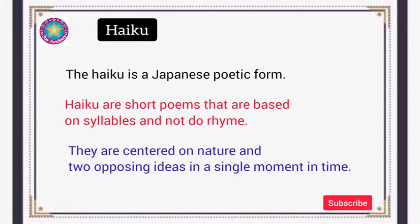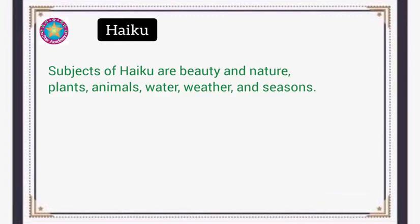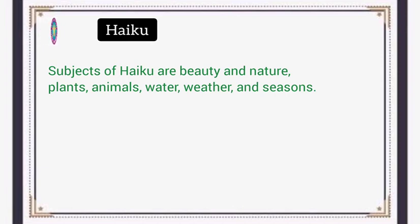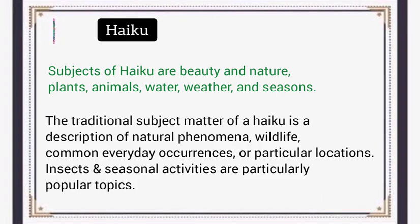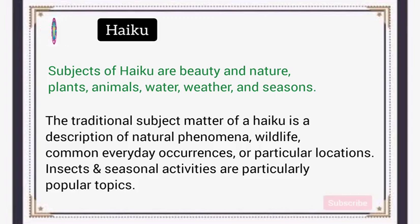There are two opposing ideas in Haiku poems and these poems are always based on nature. Haiku poems discuss beauty and nature — plants, animals, water, weather, and season. Haiku is a traditional poetry, so the traditional subject matters include description of natural phenomena, wildlife, and everyday occurrences or particular locations. Besides these, Haiku also discusses insects and seasonal activities as popular topics.